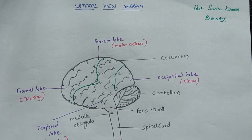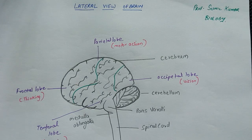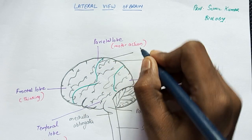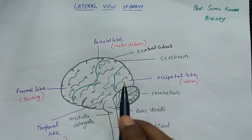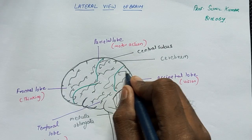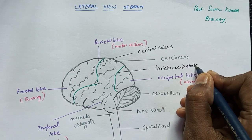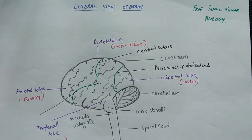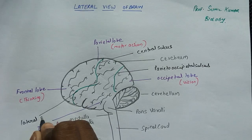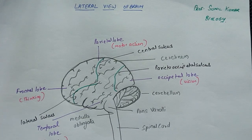Coming to the sulci: there are different sulci. The frontal and parietal lobes are divided by a sulcus called the central sulcus. Between the parietal lobe and the occipital lobe, there is a sulcus called the parietal-occipital sulcus. Between the parietal lobe and the temporal lobe, there is a sulcus called the lateral sulcus. This is how you can label all the various parts of the lateral view of the brain. That's it for today — thank you very much.